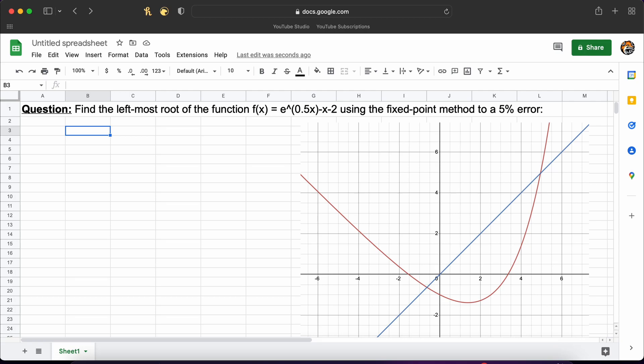To walk through how to do this I will be completing the following example. The problem states for us to find the leftmost root of the function e to the power of 0.5x minus x minus 2, using the fixed point iteration method to a percent error of 5%.